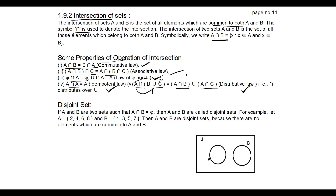Next is disjoint sets. If there is no element common between two sets, they are called disjoint sets. For example, A = {2, 4, 6, 8} and B = {1, 3, 5, 7} — A contains all even numbers and B contains all odd numbers, so there is no common element. In the Venn diagram, A and B are drawn separately with no overlapping region, showing they are disjoint sets.